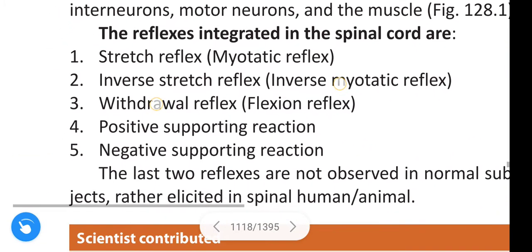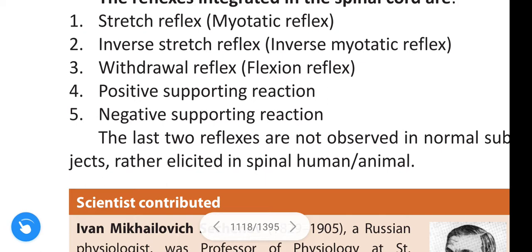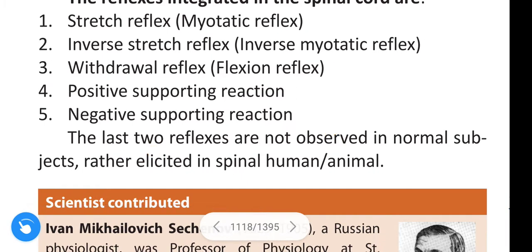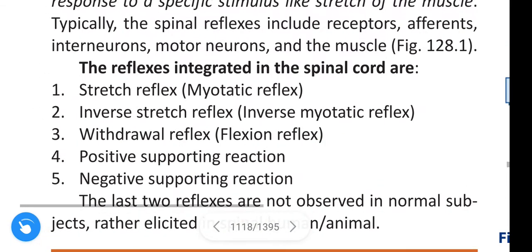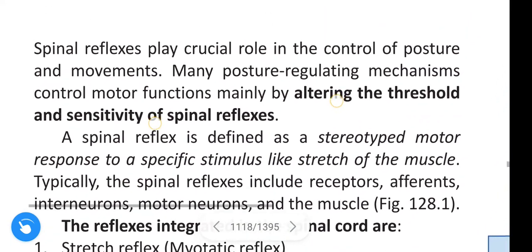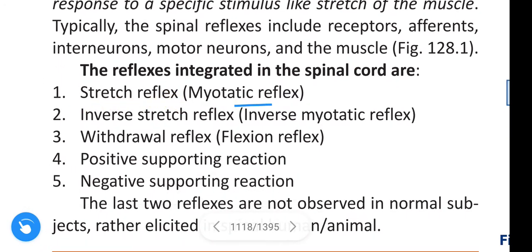These are the reflexes integrated in the spinal cord. The last two reflexes — positive supporting reaction and negative supporting reaction — are not observed in normal subjects; rather, they are elicited in spinal human or animal. In the next video we are going to learn about stretch reflex, also called myotatic reflex. If you like this video, like, share, and subscribe. Thank you.